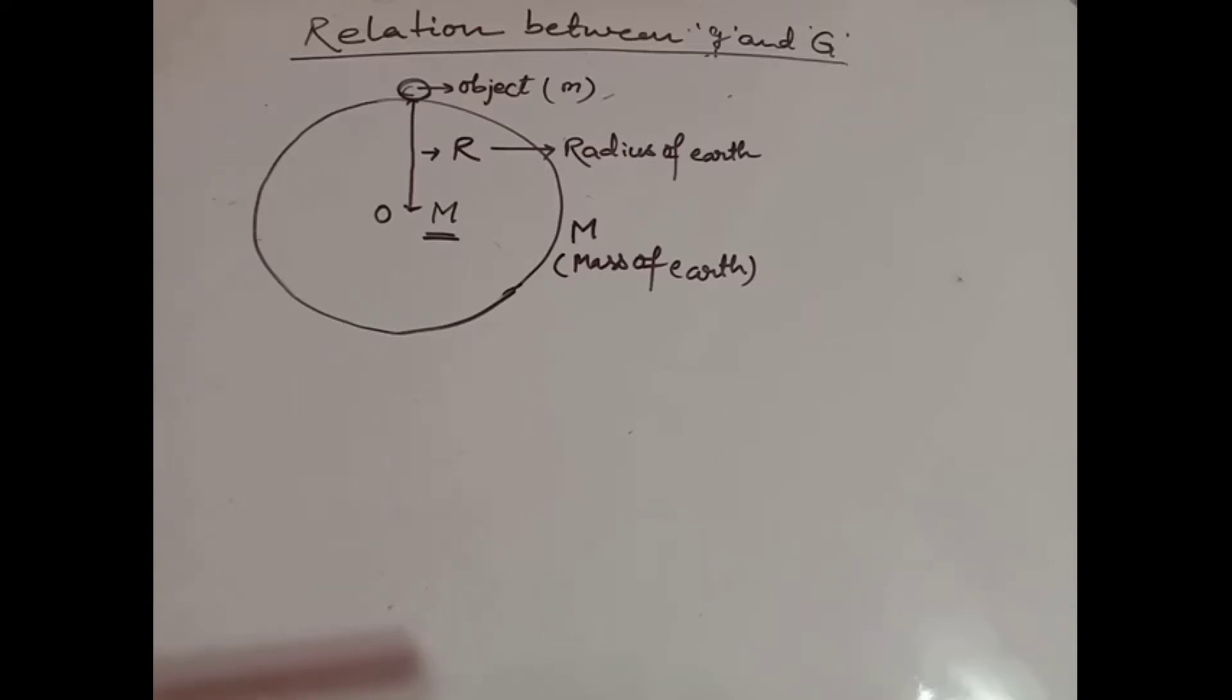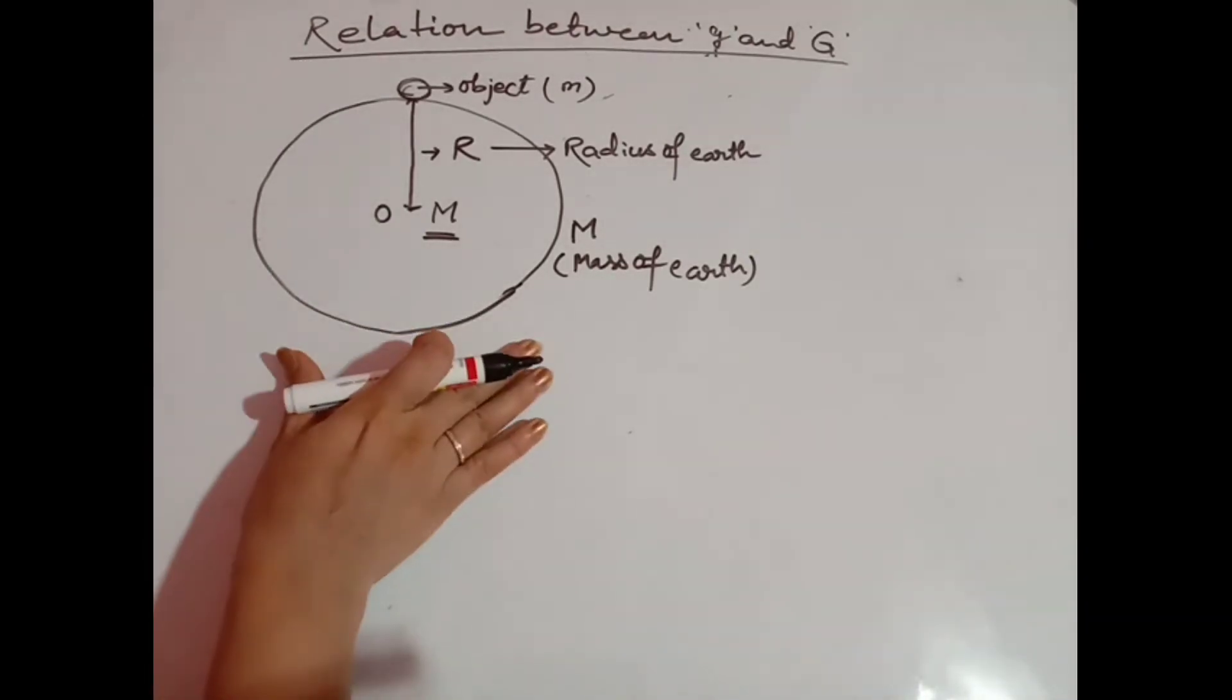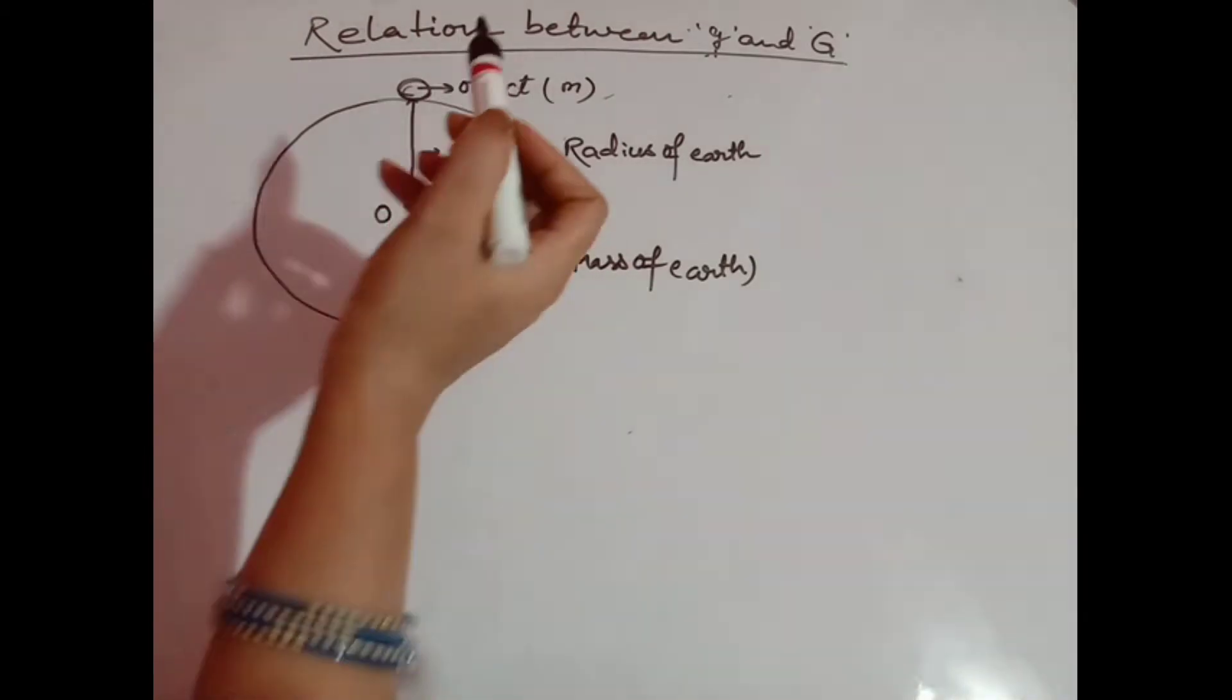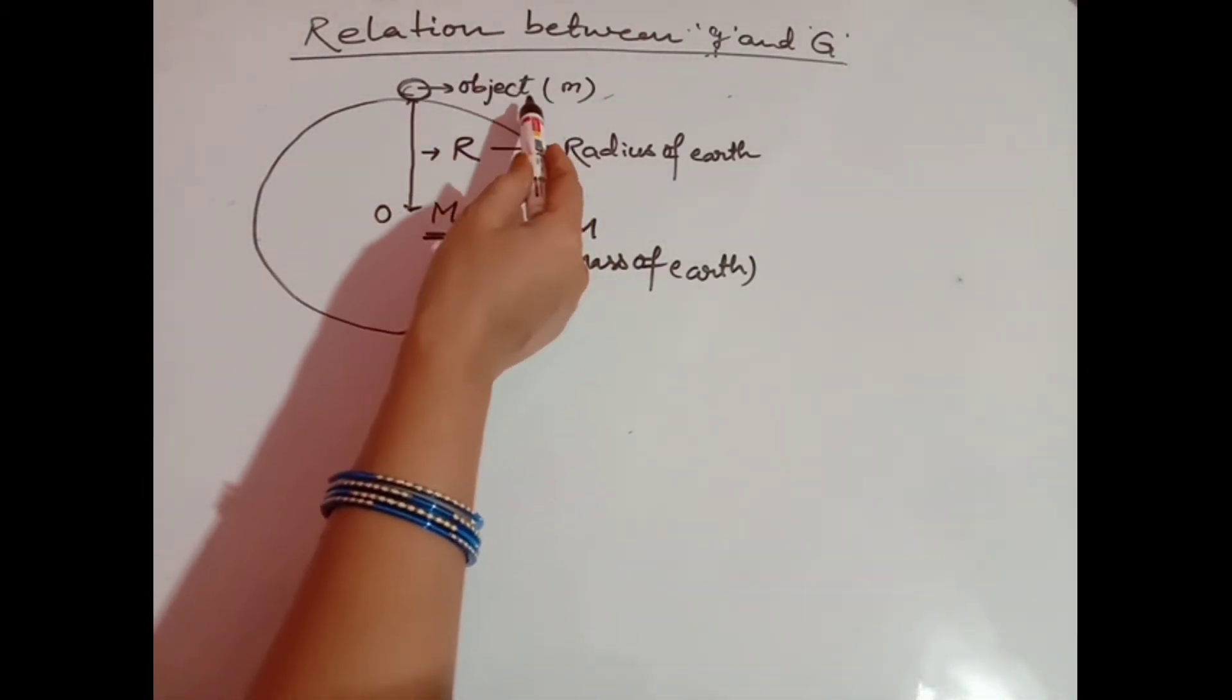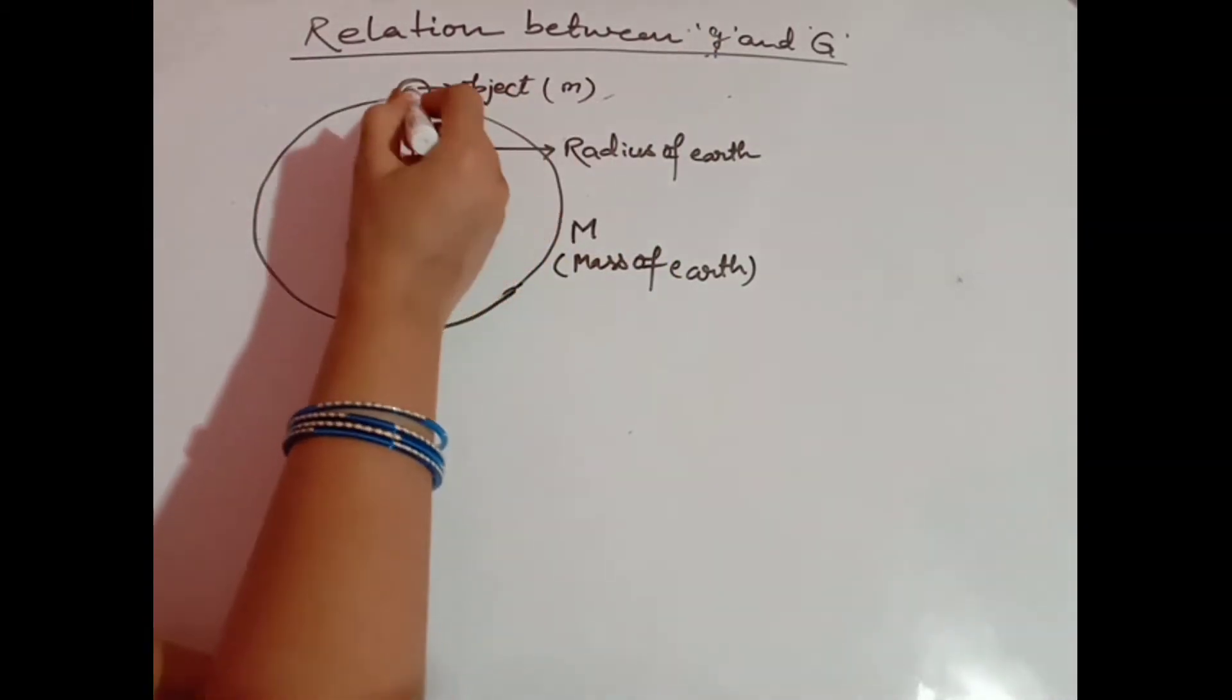The relation between acceleration due to gravity and universal gravitational constant. Let's understand the picture first. We assume two objects: one object is our Earth and another object is on the surface of the Earth. This object with mass small m is placed on the surface of Earth.